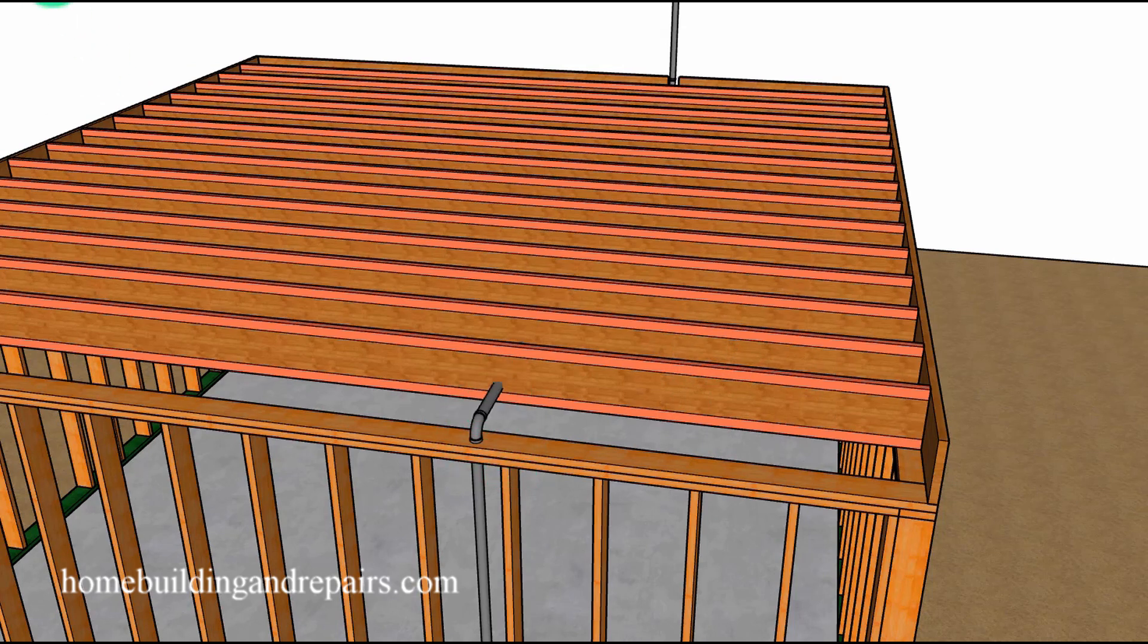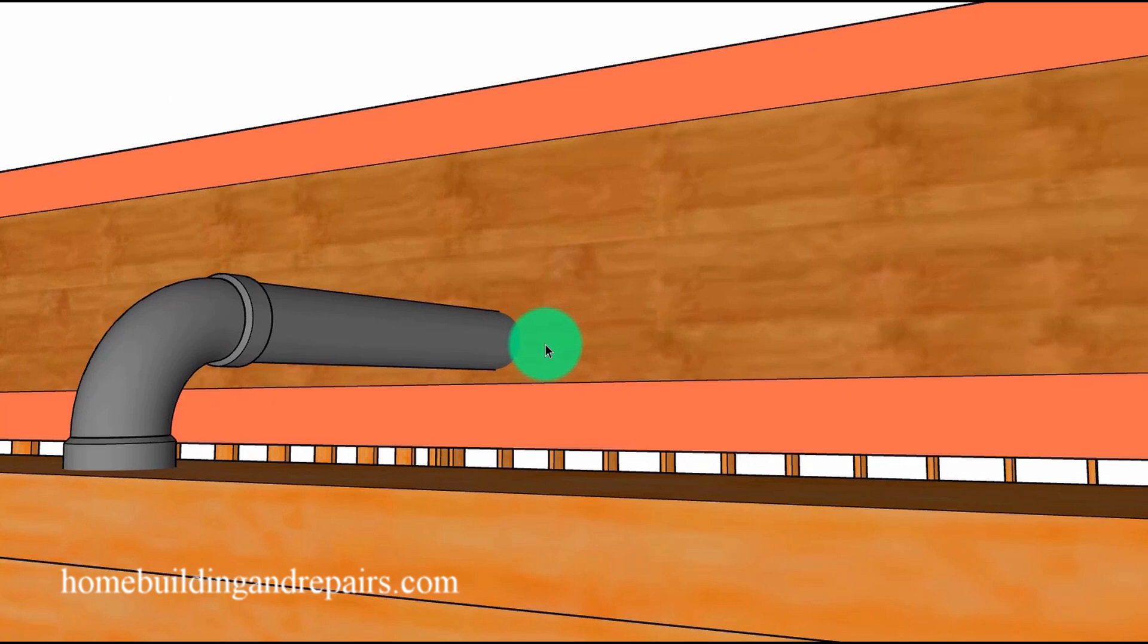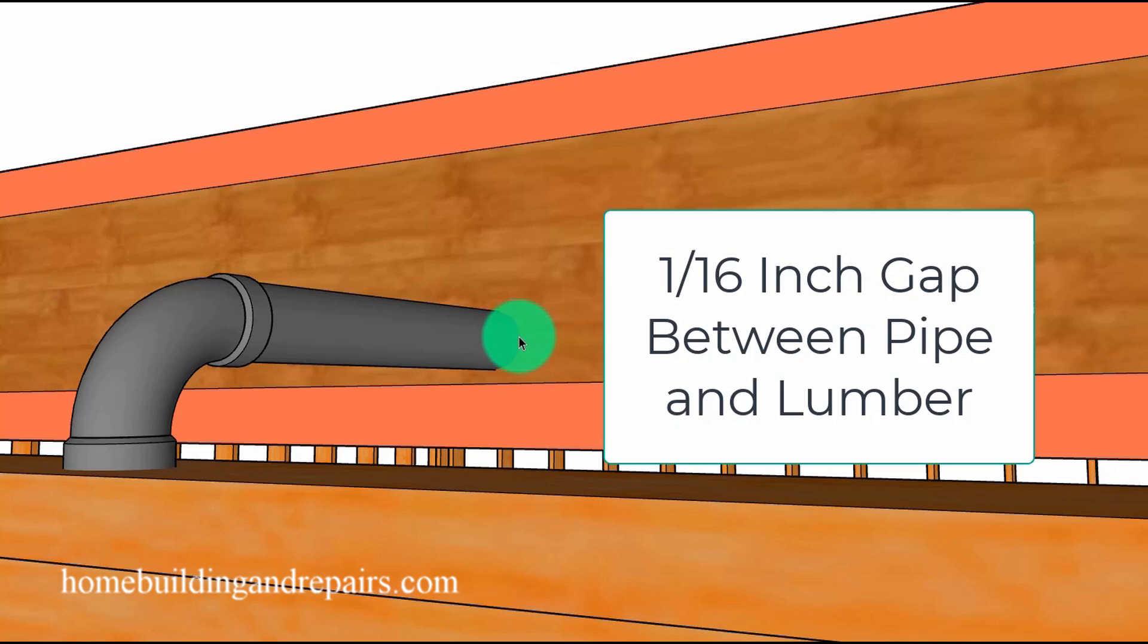Next up, let's install a one and a half inch diameter pipe that is going to be the inside diameter. The outside diameter is going to be about 1.9 inches, and some building codes will require a minimum distance of one sixteenth of an inch.